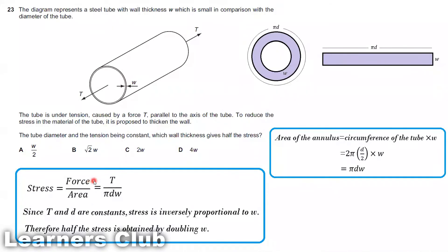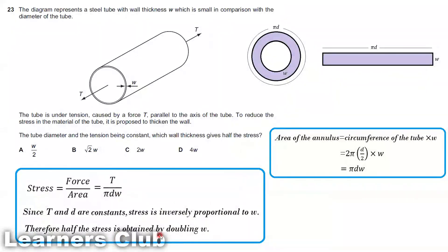Stress is equal to force divided by area. Here force is tension T and the cross-sectional area is πdW, so stress = T / (πdW). Keeping T and d constant, π is also constant, so stress is inversely proportional to W. If we want to halve the stress, we need to double the thickness W. Therefore, half the stress is obtained by doubling W — the answer is option C.